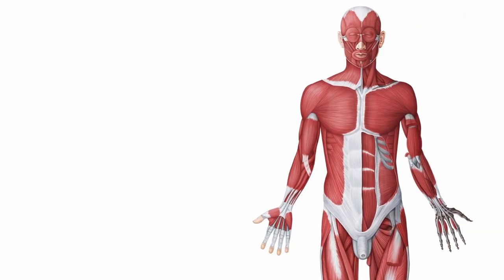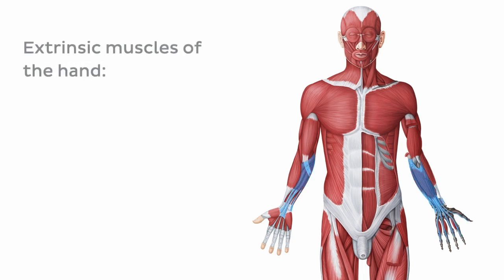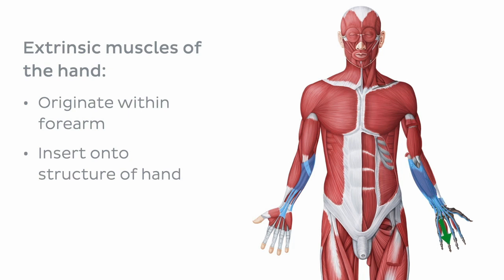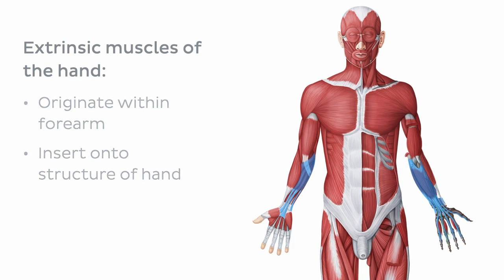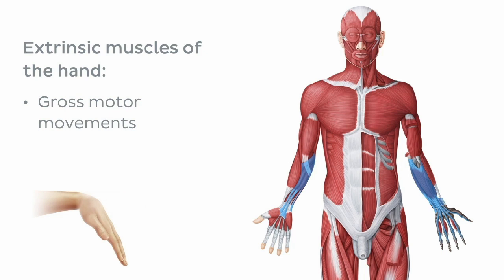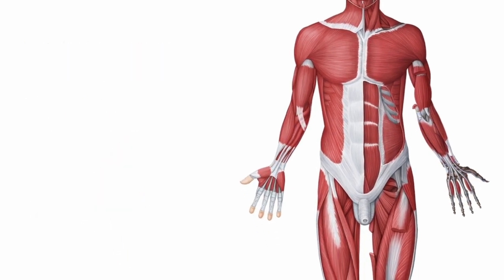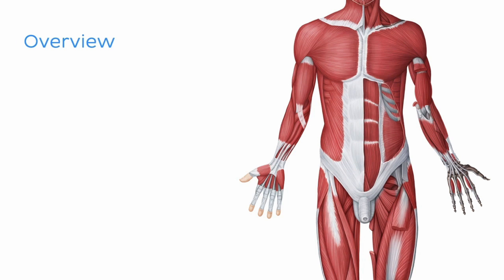There are two muscle groups which create movement at the hands and fingers. These are the extrinsic and intrinsic muscles of the hand. The extrinsic muscles of the hand are the muscles which originate within the forearm and extend to insert onto the structures of the hand. These muscles facilitate the gross motor movements of our hands, but we aren't going to be focusing on this muscle group today. In today's tutorial, we're going to take a look at the intrinsic muscles of the hand.